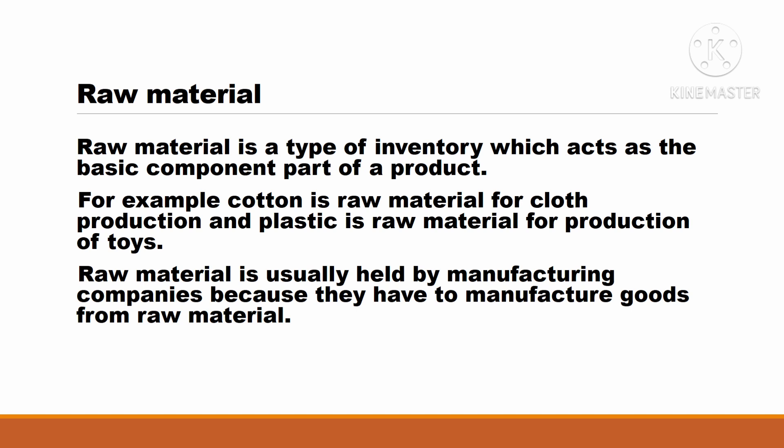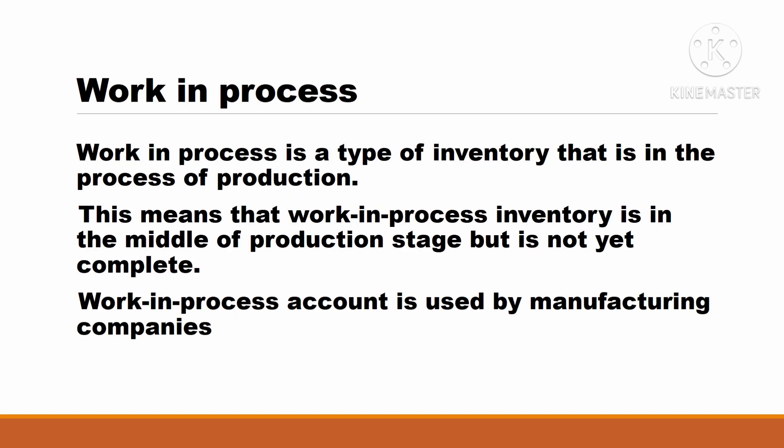Work in process is a type of inventory that is in the process of production. This means that work in process inventory is in the middle of the production stage but is not yet complete. The work in process account is used by manufacturing companies.